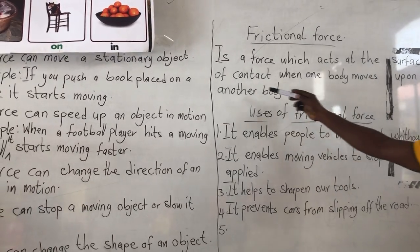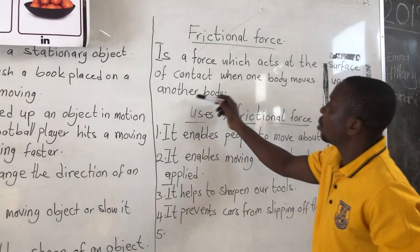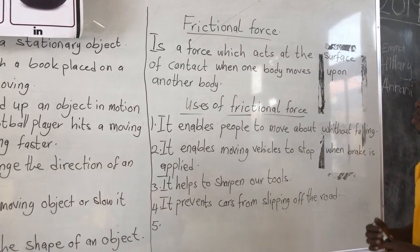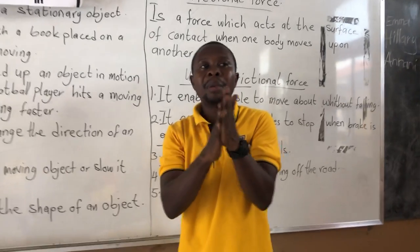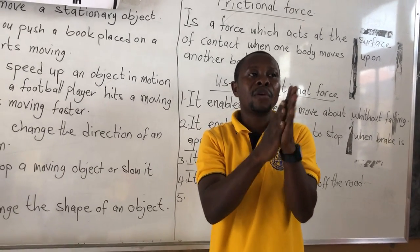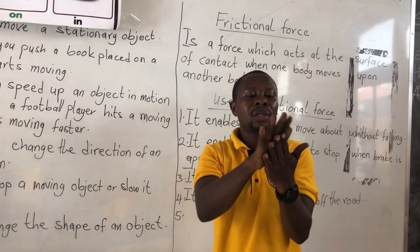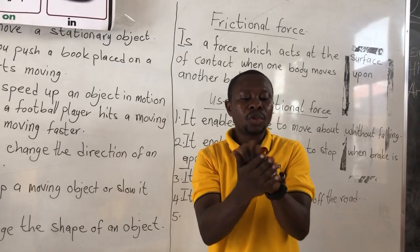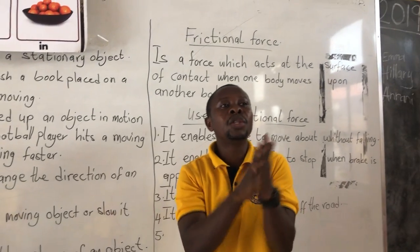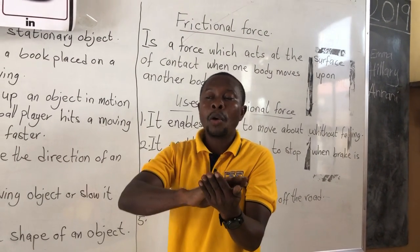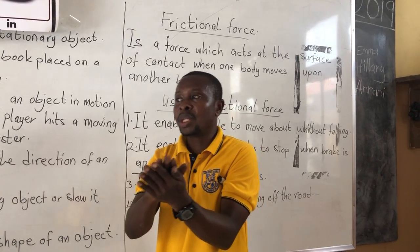It is a force which acts at the surface of contact when one body moves upon another body. For example, when I rub my hands together, there is a friction force. The hands will not move past each other easily, but when you apply oil, you can see that they move faster because the oil has reduced the contact between the palms, thereby reducing friction.